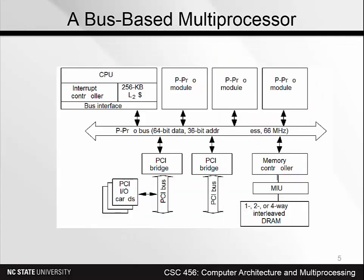Let's take a look at a block diagram of a bus-based multiprocessor. You can see there is a shared L2 cache and processor modules that are also on the bus. The P-PR designation likely refers to Pentium Pro modules — this diagram is about 15 years old, but the general structure is still in use today. A shared bus connects the CPU and all modules, with processors on one side, memory on another side, and I/O devices on the other. That sets the stage for our consideration of cache coherence.